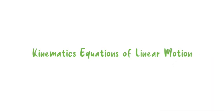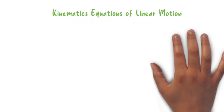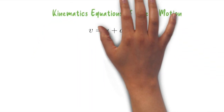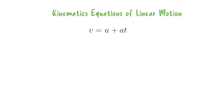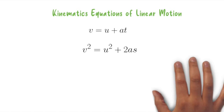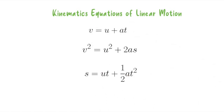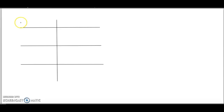Let's have a quick recap on the kinematics equations we're going to use to solve problems related to projectile motion. There are three equations: the first is v = u + at, the second is v² = u² + 2as, and the third is s = ut + ½at².